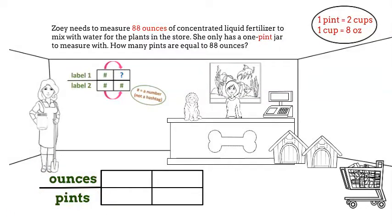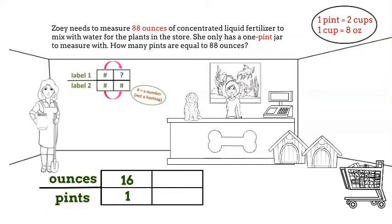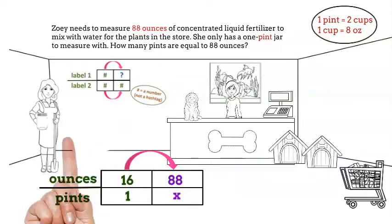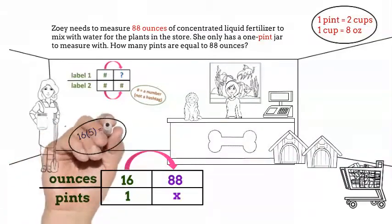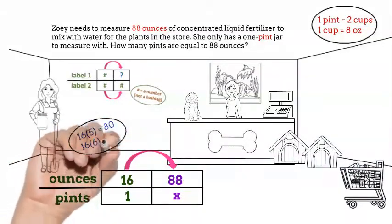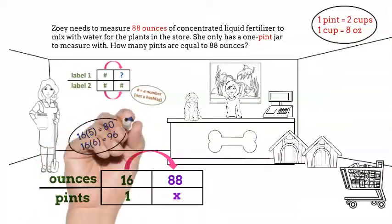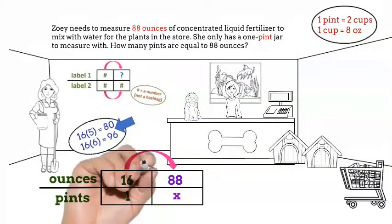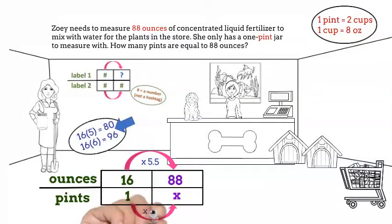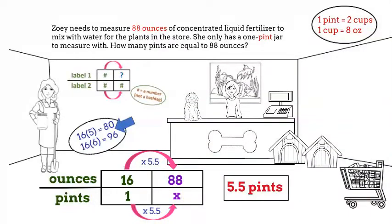We'll set up our graphic organizer as ounces to pints and have 16 over 1. Since the 88 is ounces, it will go in the numerator and x will go in the denominator. What can we multiply 16 by to get 88? I know that 16 times 5 is 80 and 16 times 6 is 96. Since 88 is right in the middle, 16 times 5.5 is 88. Now we simply need to multiply 1 times 5.5 and we'll have our answer. 88 ounces equals 5 and a half pints.